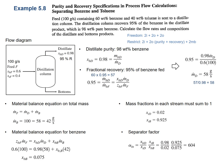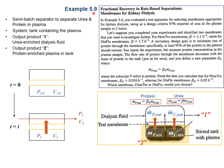That's it for Example 5.8. Example 5.9: fractional recovery in rate-based separations — membranes for kidney dialysis. In Example 5.6, you evaluated a test apparatus for selecting membranes appropriate for kidney dialysis.